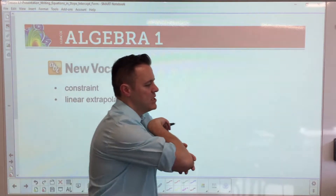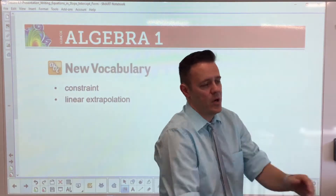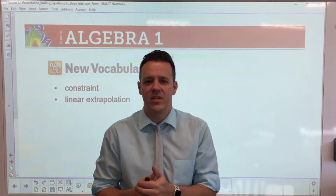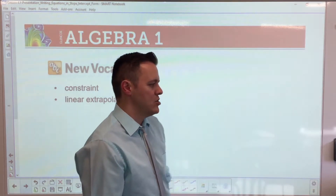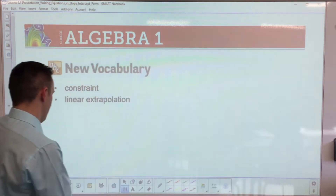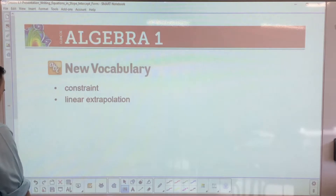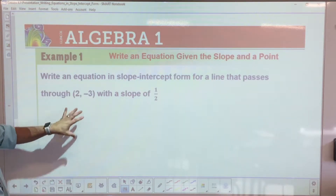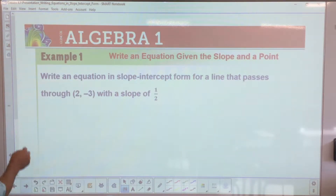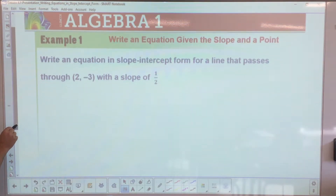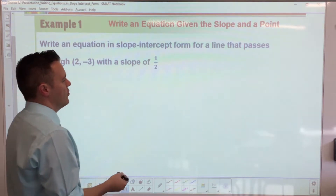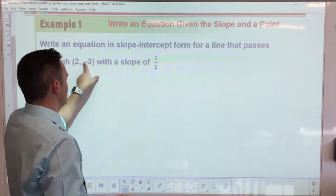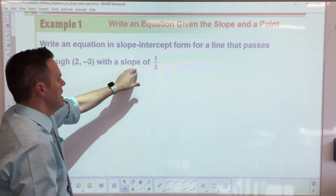On your notes, please make sure you've printed them from Canvas. If you don't have them from Canvas, get them from me. We're on page 225, so please have your books open because I'm going to explain a couple of formulas. Write an equation in slope-intercept form for a line that passes through a given point and has a given slope.